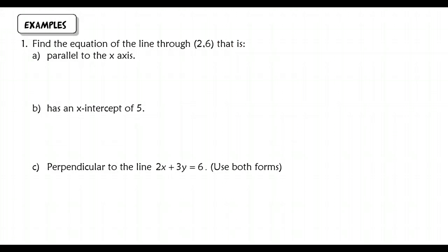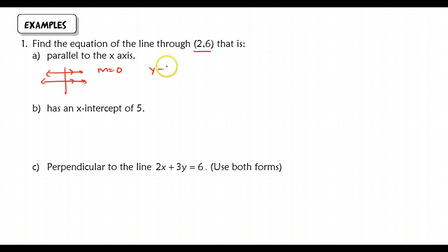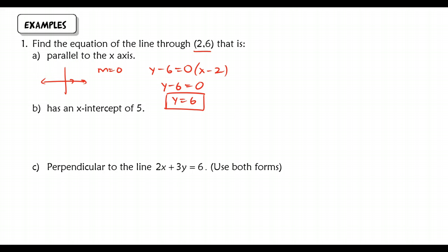Let's move on to example number one. We're going to find the equation of a line through (2, 6) that is parallel to the x-axis. Since it's parallel to the x-axis, it has a slope of 0. Using point-slope form with point (2, 6): y minus 6 equals 0 times x minus 2, which simplifies to y equals 6. Alternatively, we can sketch it: since every y-coordinate on this horizontal line must be 6, we get y equals 6.